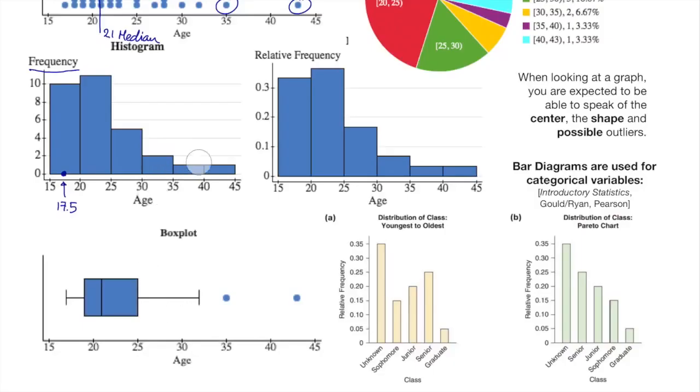All these were graphical representations of the variable age in the introductory statistics class. If the variable is not numerical, if the variable is categorical, we can still use a pie chart, like the example of the ethnicities that I put before. We cannot use a histogram, but we can use something similar called bar diagram or bar chart.